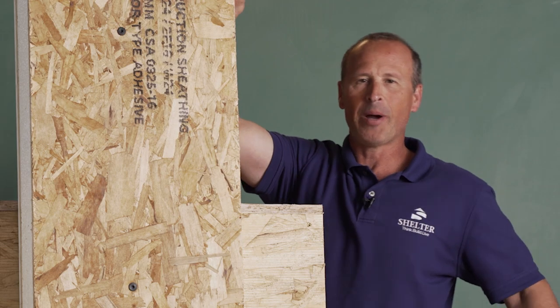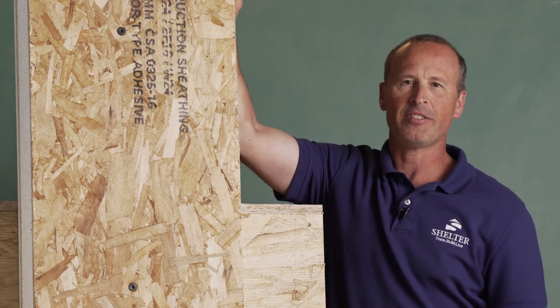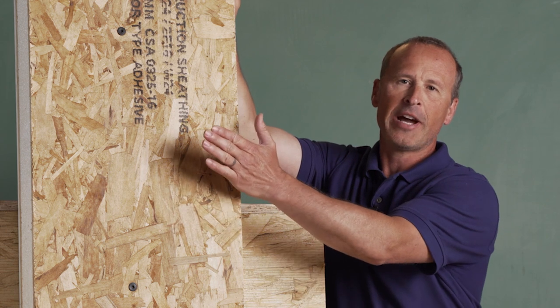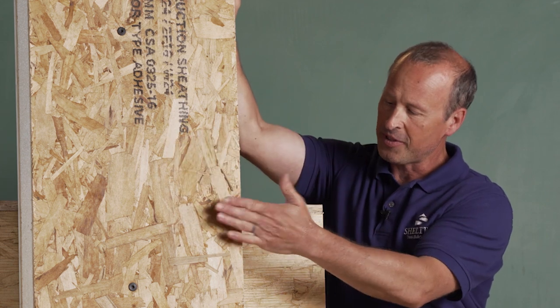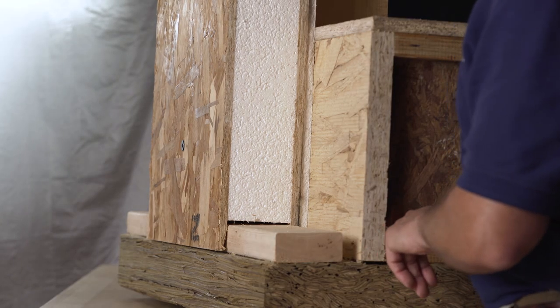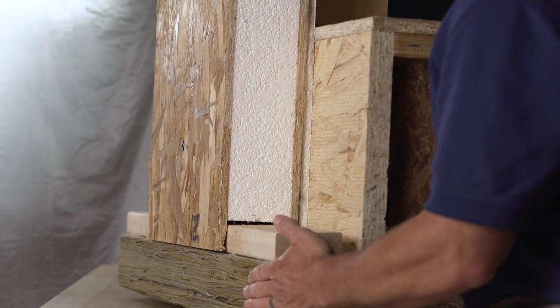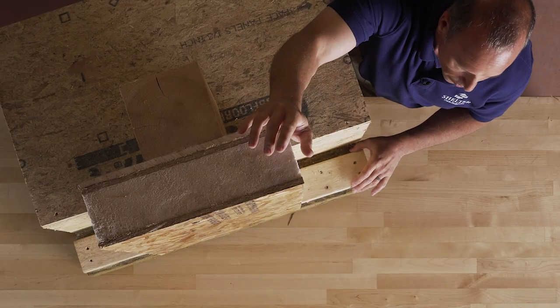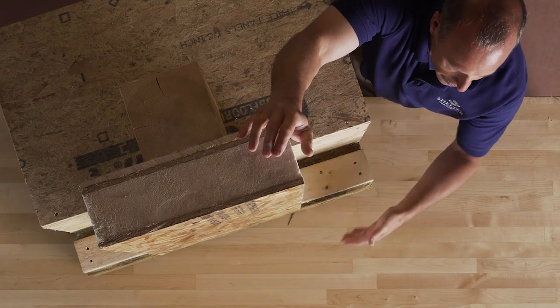So just to wrap up, reiterate how all of this is attached. We do use mechanical fasteners to attach the SIP to the timber frame and from the SIP into the first floor platform. The I-joists are actually also screwed into the sill plate.